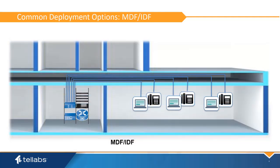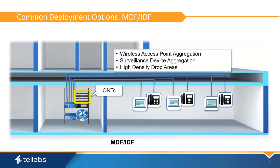In an MDF-IDF deployment, the ONT is rack mounted, much like workgroup switches. This is the ONT of choice when existing copper cable is reused from a workgroup switch installation, or many Ethernet ports are needed in a dense area. This ONT can be used for wireless access point aggregation, surveillance device aggregation, as well as conference rooms and classrooms where large numbers of ports are needed in a small area.